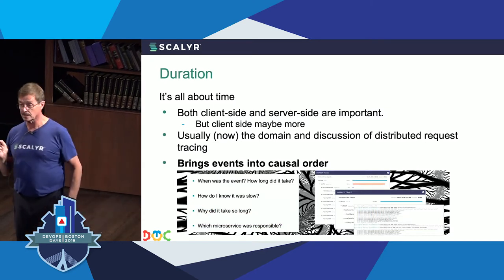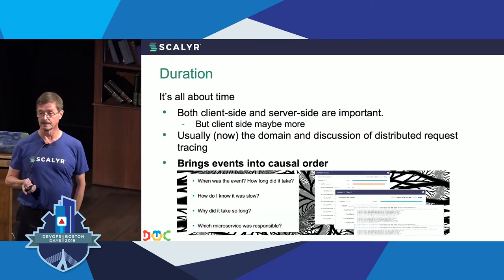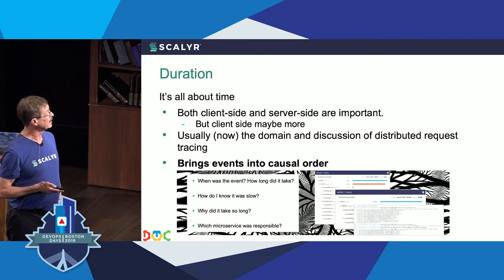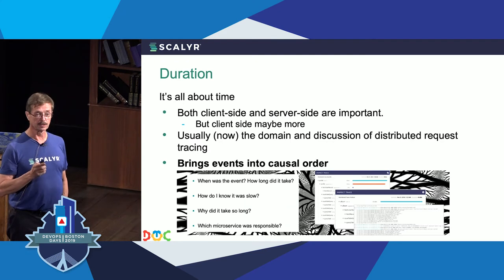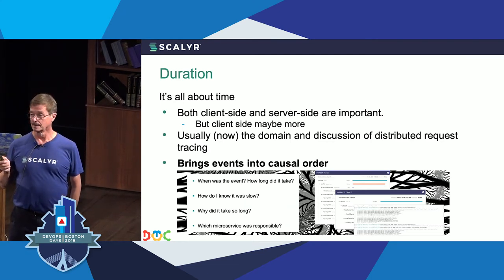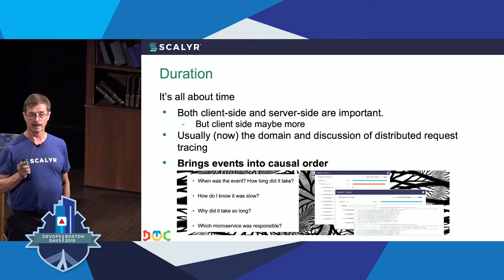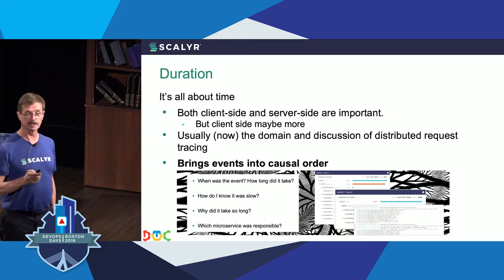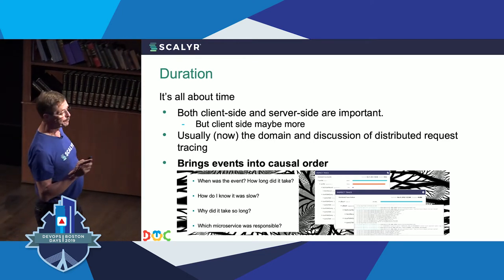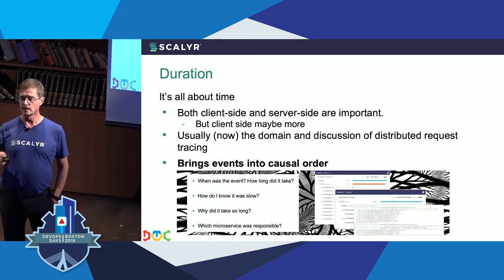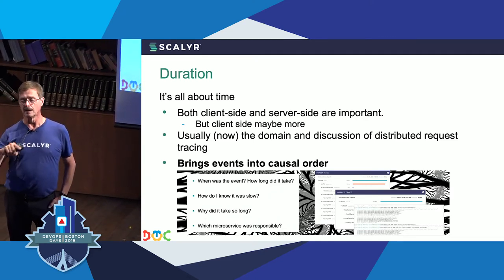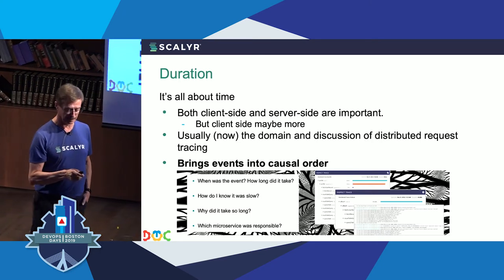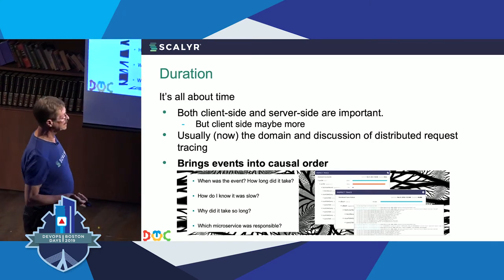You'll hear a lot about duration in the context of distributed request tracing. Most distributed request tracing these days is based on the server side, but the client side is equally if not more important — because that response time curve comes into play. Duration brings events into order so you now know what sequence things happened in, and it can help you understand what the pathway through your system looked like.